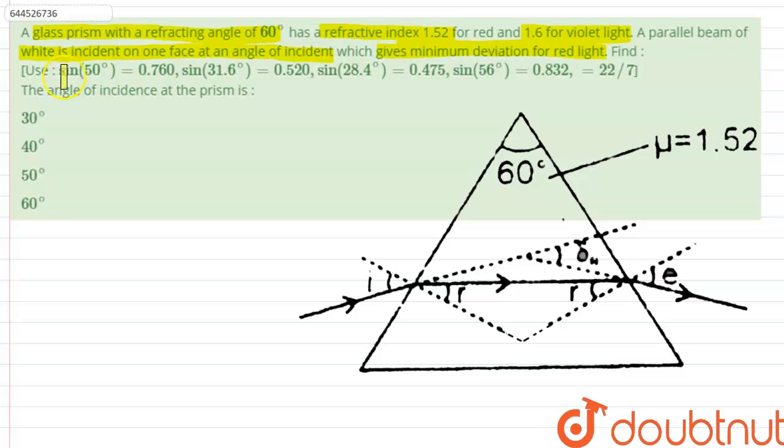Therefore, find the angle of incidence at the prism. So the question is asking us to find out the angle of incidence at the prism if the minimum deviation is for red light.